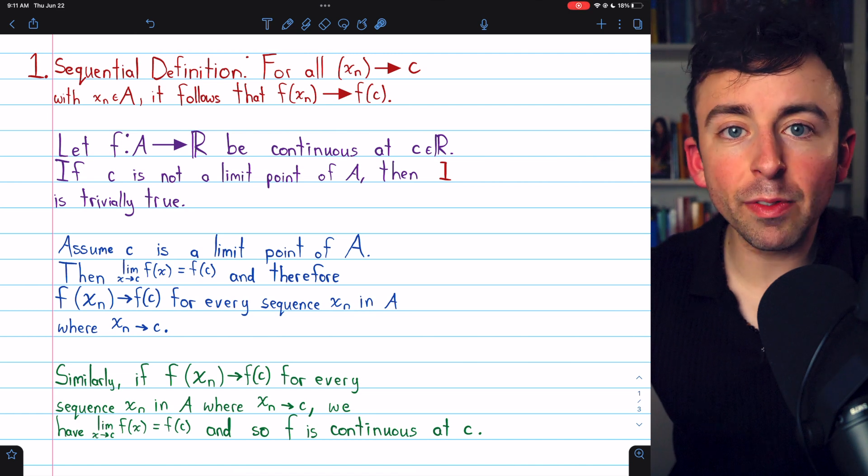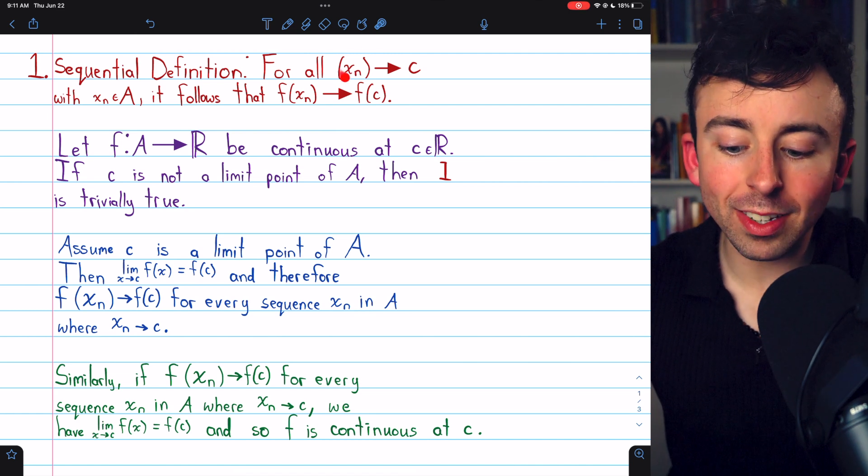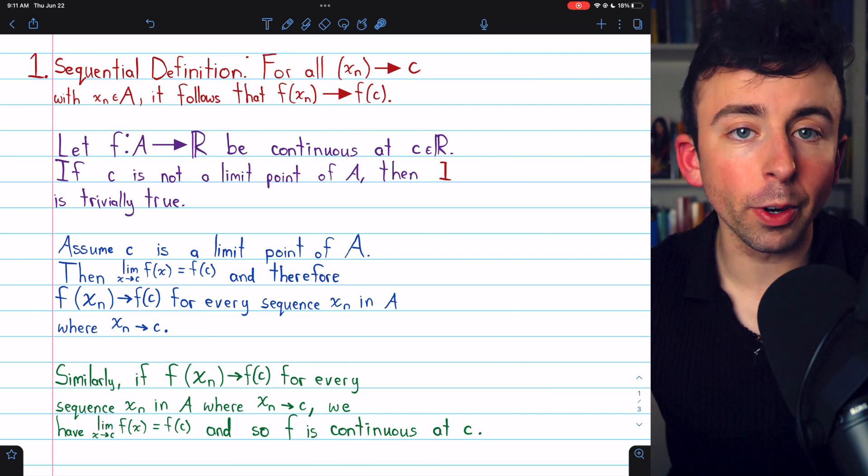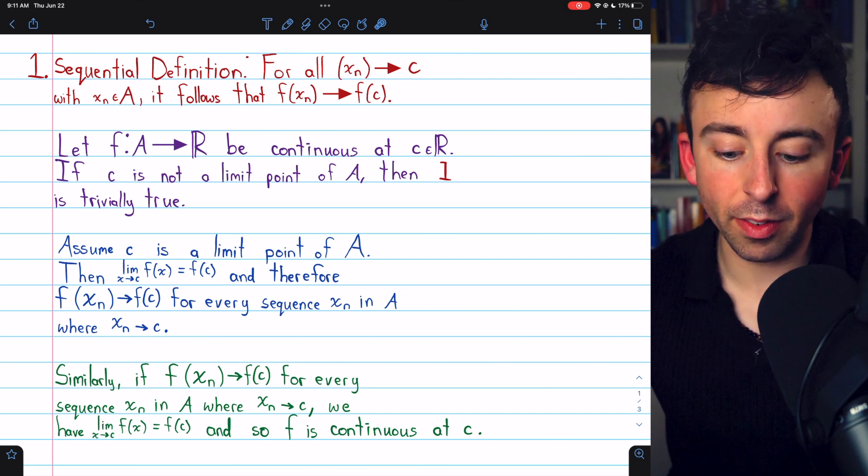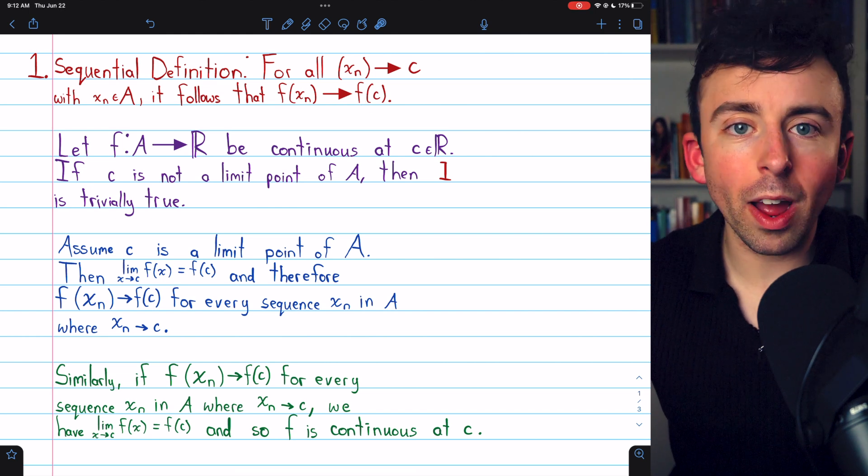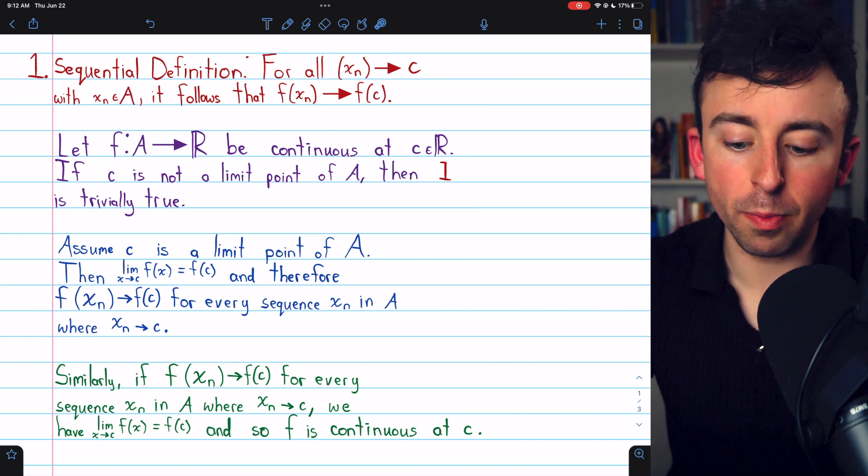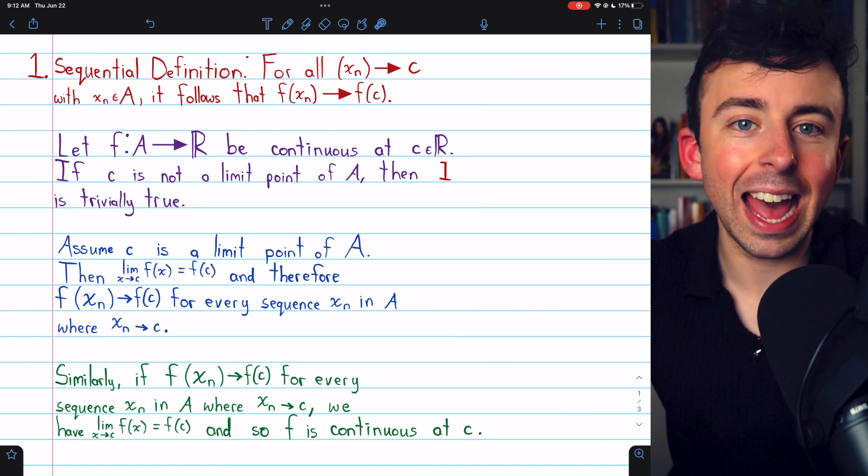In conclusion, we've proven that if a function is continuous at c, then for every sequence in the domain converging to c, the sequence of the images converges to the image of c. So, no matter how you try to approach c on the x-axis, the images will be approaching the function's image at c.